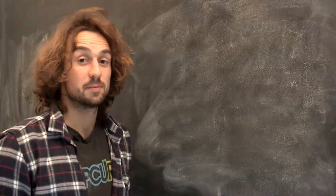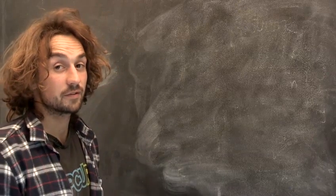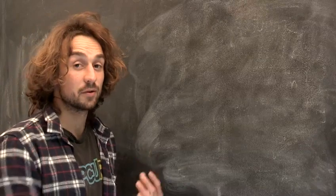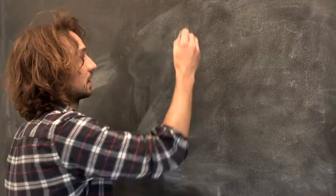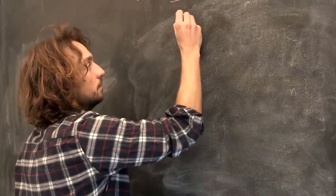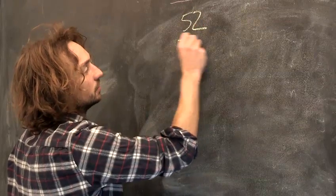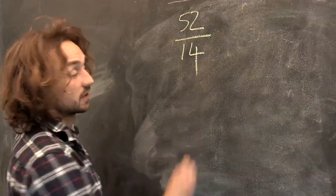In this video I'm going to show you how to simplify fractions. Now, fractions are basically anything written one thing over another. So let's take 52 over 14. That's a fraction.